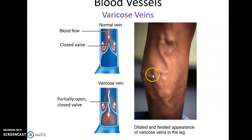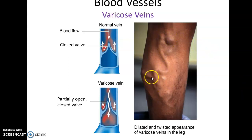Varicose veins occur when valves in veins stop working correctly. The valves don't close completely, resulting in backflow of blood. This backflow causes pooling of blood in certain areas, such as in the legs. This condition is somewhat painful, and people with varicose veins in their legs are often advised to wear special compression socks to squeeze their legs and help prevent blood from pooling in those veins.